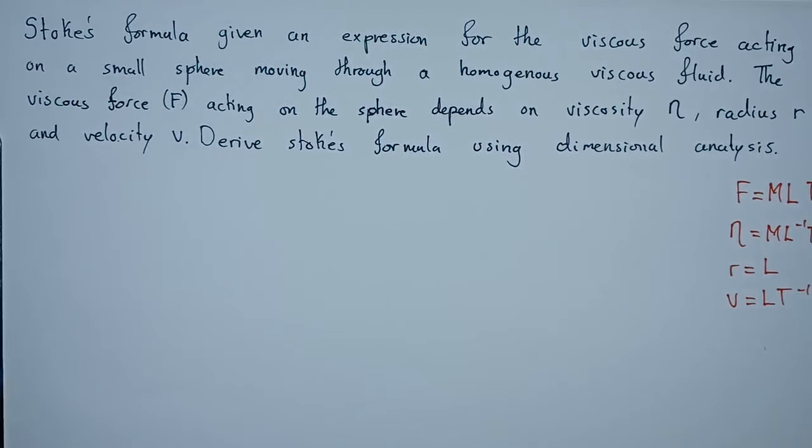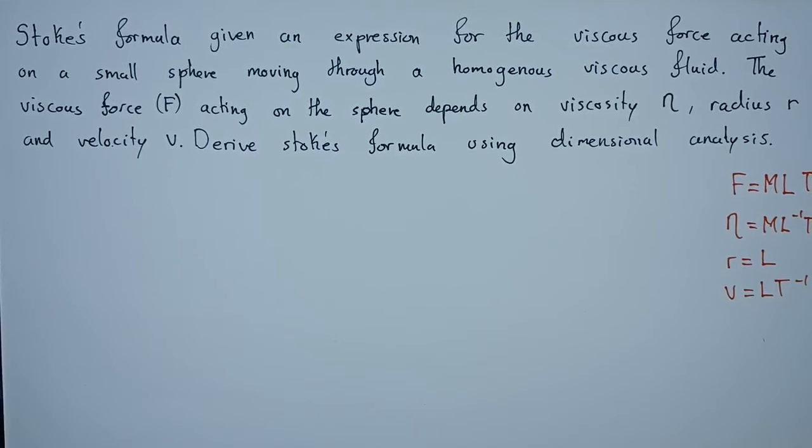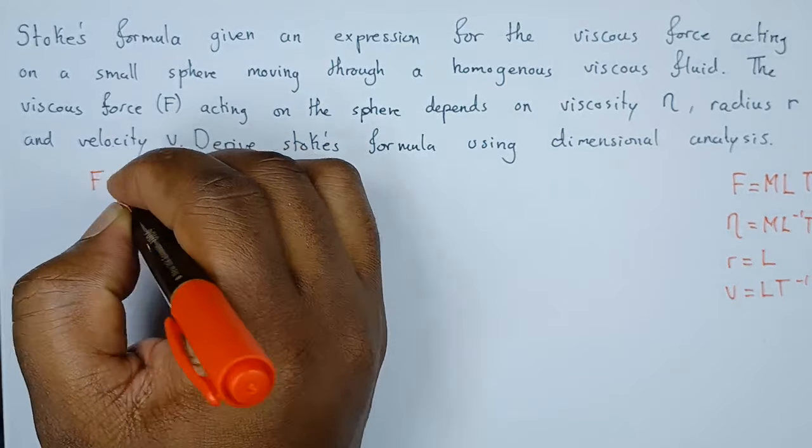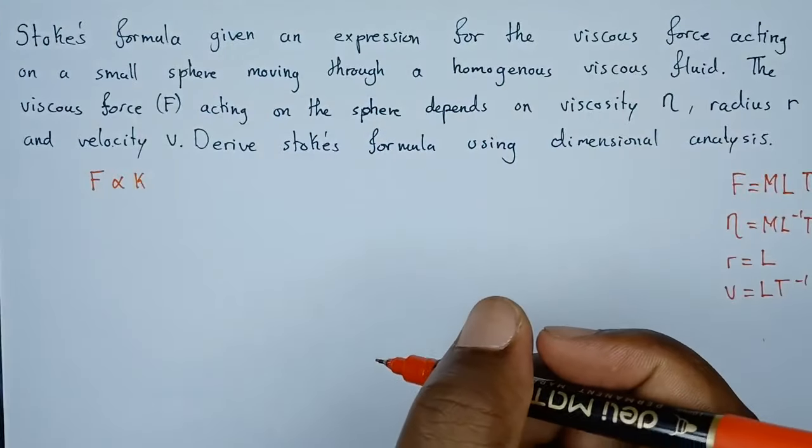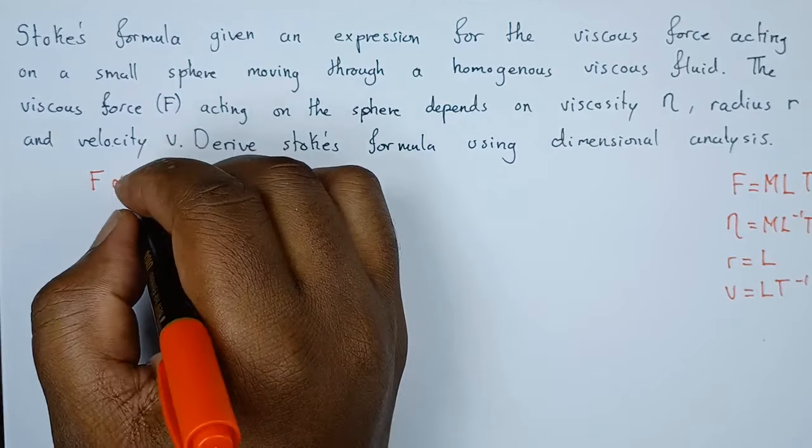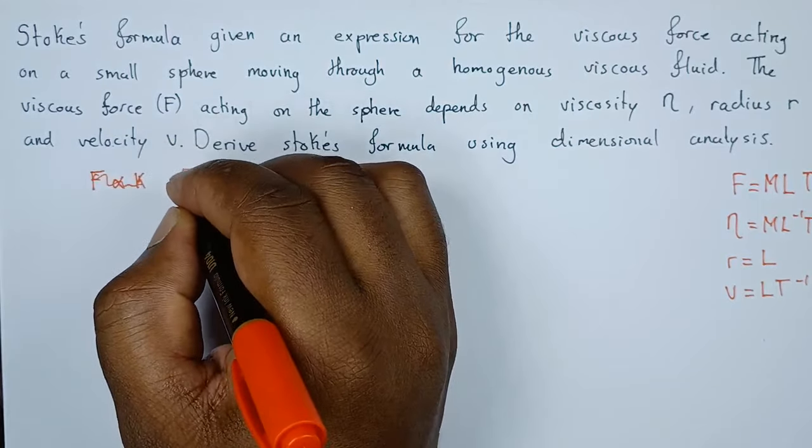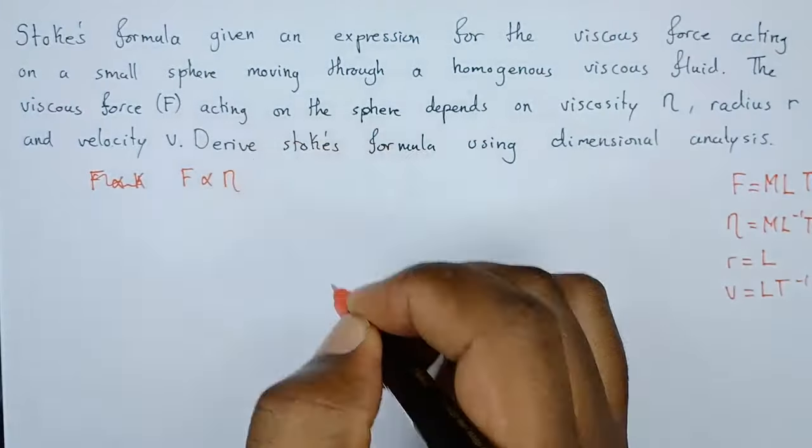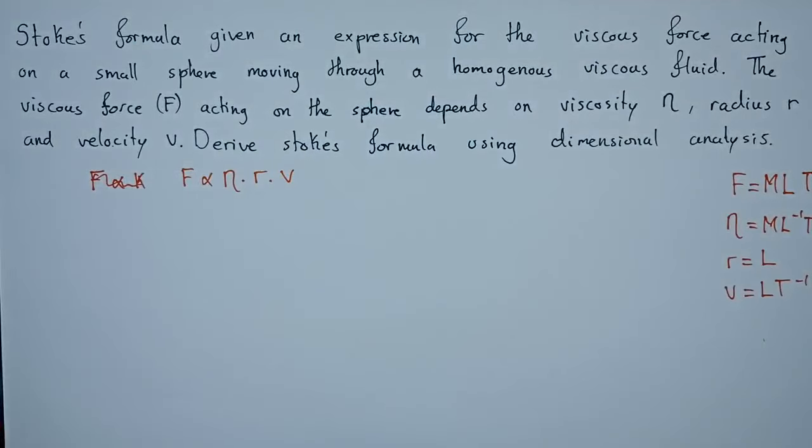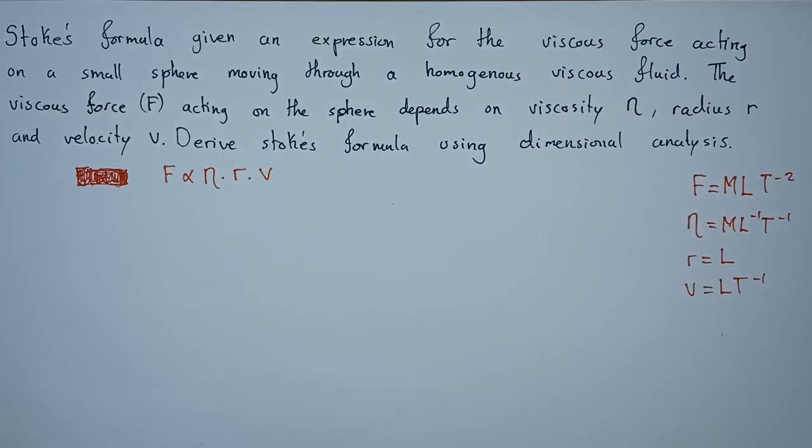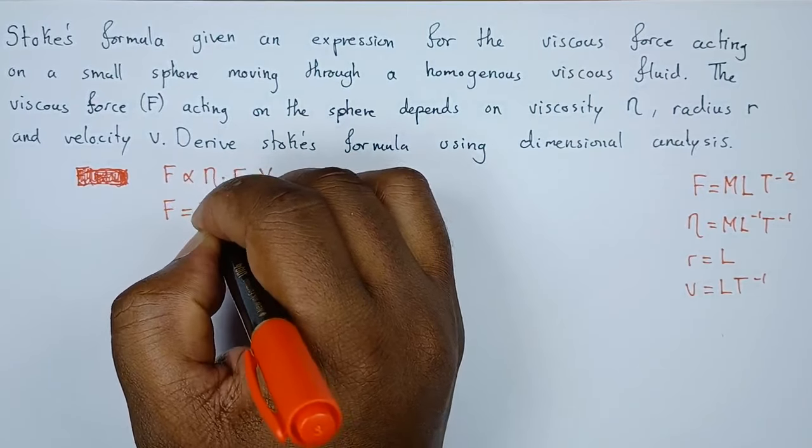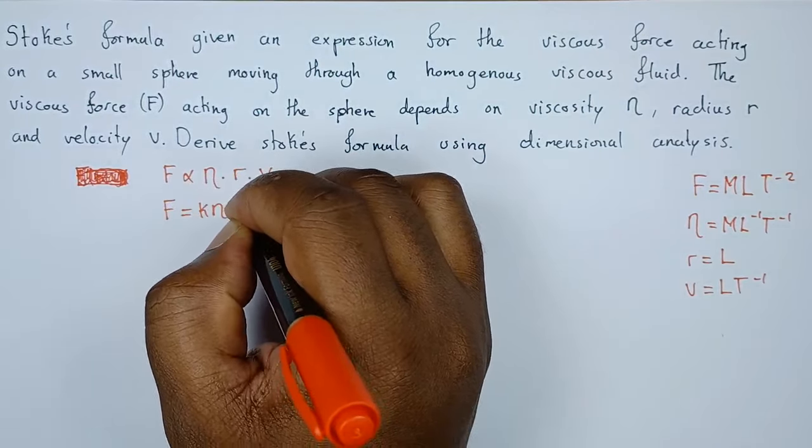Now that we have these dimensions, let's see how we can answer this question. Since we're saying that the force is depending on these other quantities, we can say force varies with η times radius times velocity. Since it's a variation, we can now rewrite it as F equals K η times r times v.